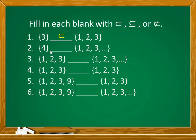Number 2, is 4 present in the second set? Yes it is! These 3 dots after 1, 2, 3 in the second set indicate that it is continuous in this pattern — it is actually an infinite set of counting numbers with elements 1, 2, 3, 4, 5, 6, and so on. So 4 is present, and the answer is a proper subset. Number 3, 1, 2, and 3 are present in the second set. But just like number 2, the second set is an infinite set — it has infinite elements. So the answer is a proper subset too.